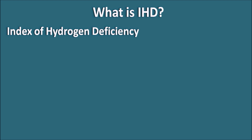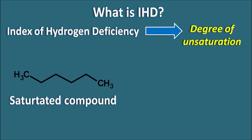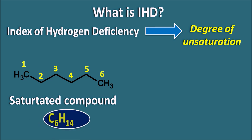Index of hydrogen deficiency indicates the degree of unsaturation. For example, let us take a saturated compound — an alkane. If we see the number of carbons, totally it is having 6 carbons. Since alkanes have the molecular formula CnH2n+2, this compound has C6H14 as the molecular formula.